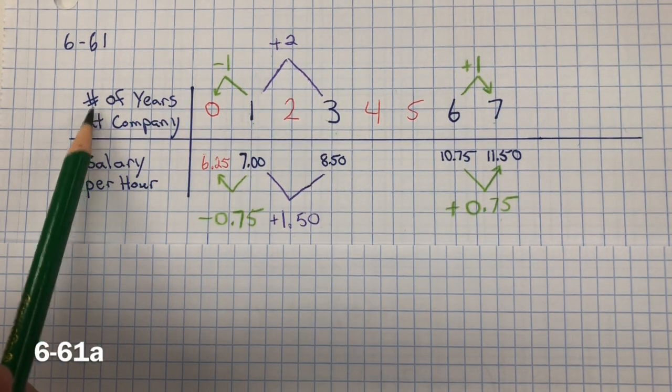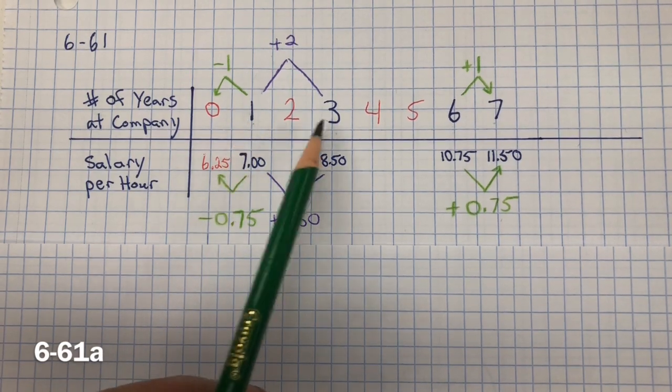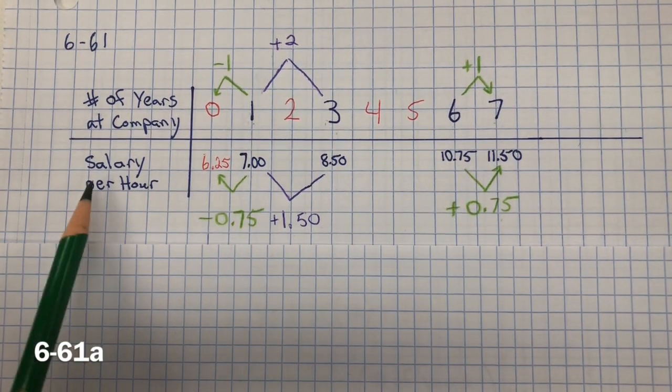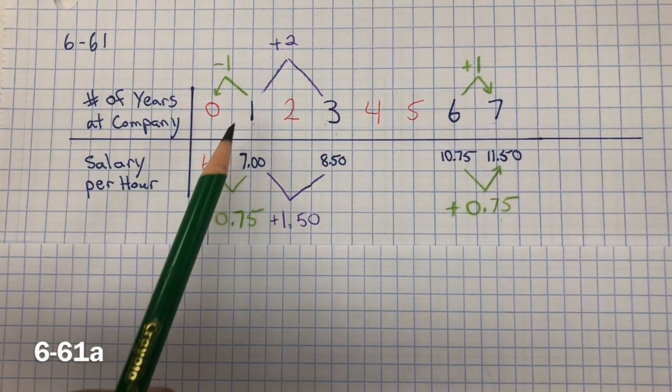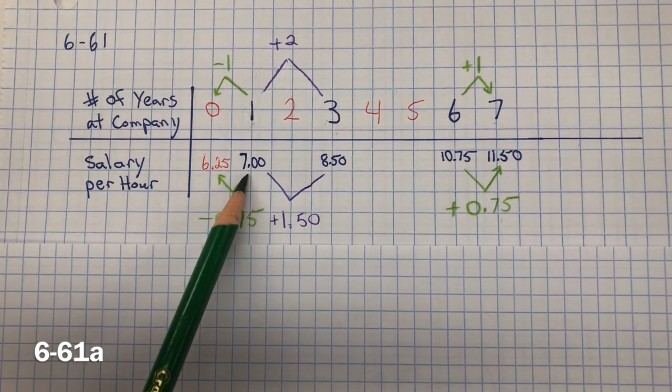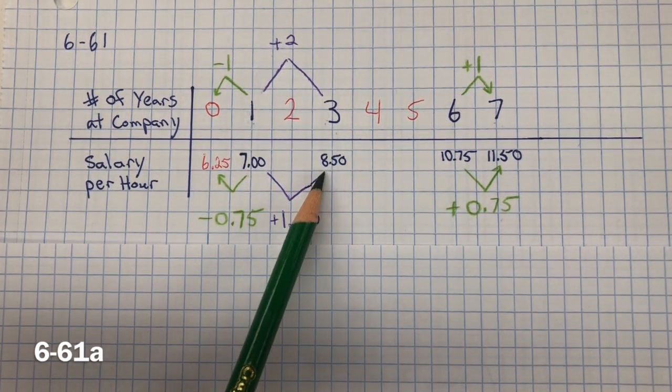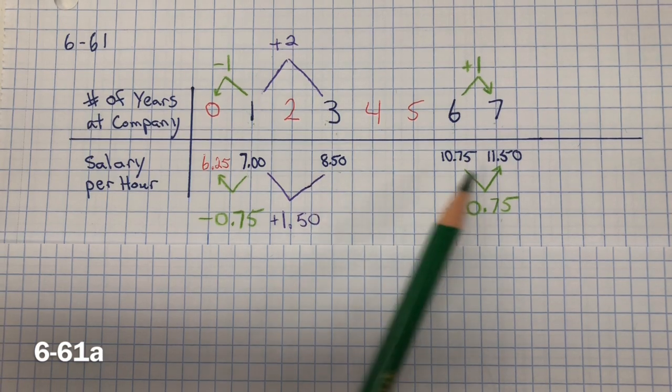So number of years at the company, it was given 1, 3, 6, and 7, and the salary per hour. After 1 year you would be making $7 an hour, after 3 years $8.50, and so forth.